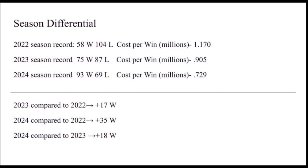Now that the simulations are over, I'm here to reflect back on the seasons. The 2022 season we had 58 wins and 104 losses, meaning the cost per win was $1.17 million on a payroll of around $67 million. The 2023 season record was 75 wins and 87 losses, with a cost per win of around $905,000. The 2024 season we had 93 wins and 69 losses, with a cost per win of $729,000. From 2023 to 2022 we had 17 more wins; from 2024 to 2022 we had 35 more wins; from 2024 to 2023 we had 18 more wins. This means we got good players for a cheap price, causing the cost per win to go down significantly.